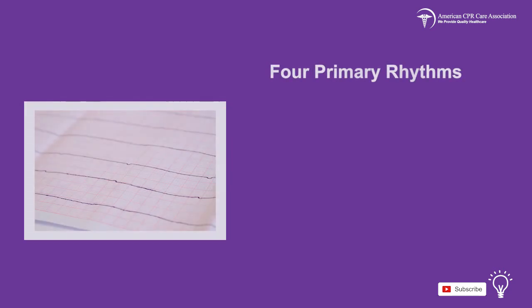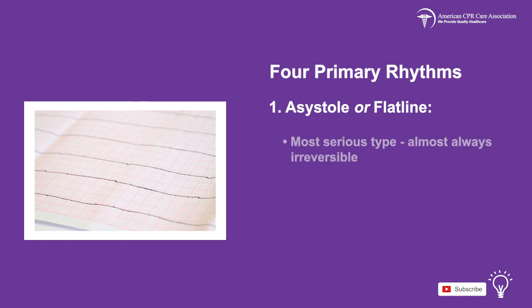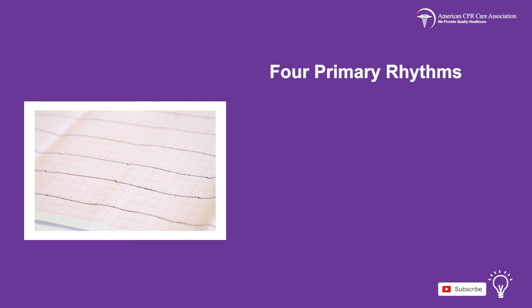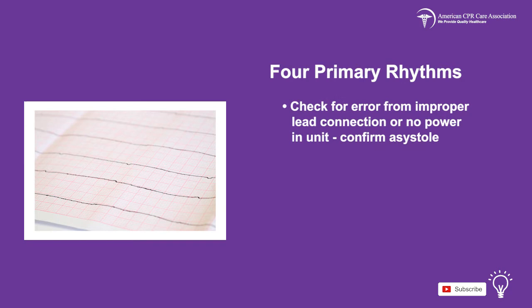There are four primary types of cardiac arrest rhythms in children covered in this video. Asystole or flatline is the first type, and it is the most serious, being almost always irreversible. Asystole is associated with no cardiac electrical activity, meaning no contraction of the cardiac muscle and therefore no cardiac output or blood flow to the body. When this rhythm presents, the first step is to ensure you are dealing with true asystole rather than an error reading due to improper lead connection or no power in the unit.